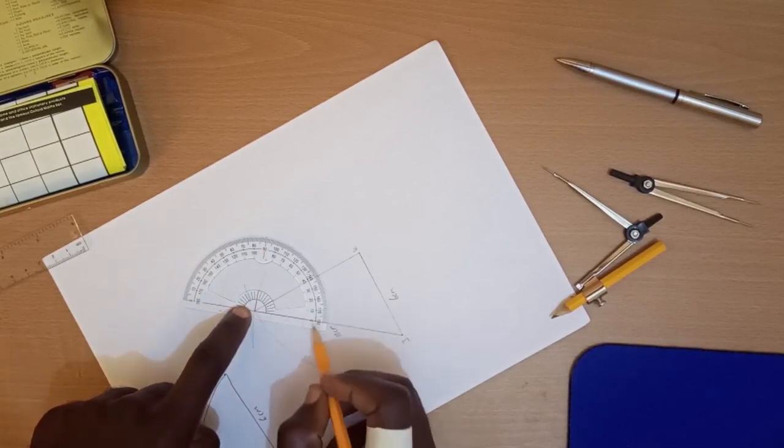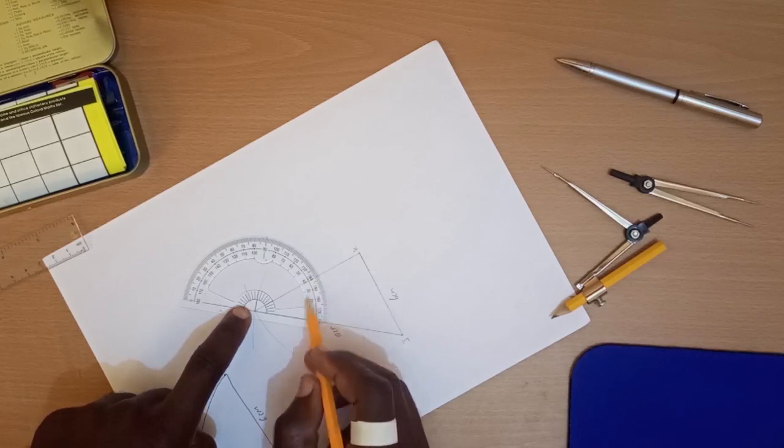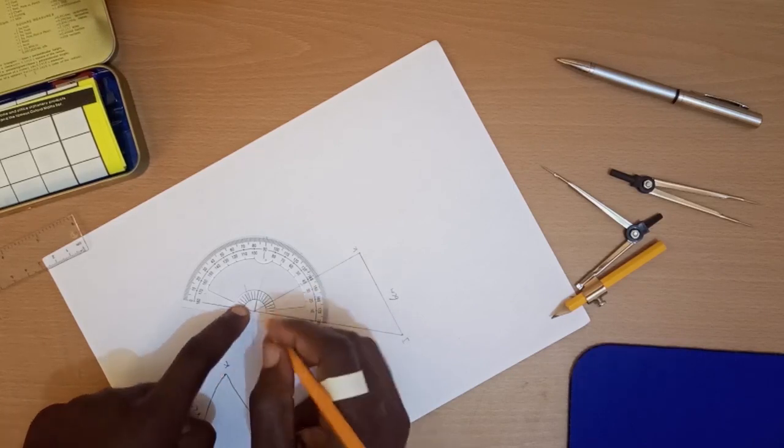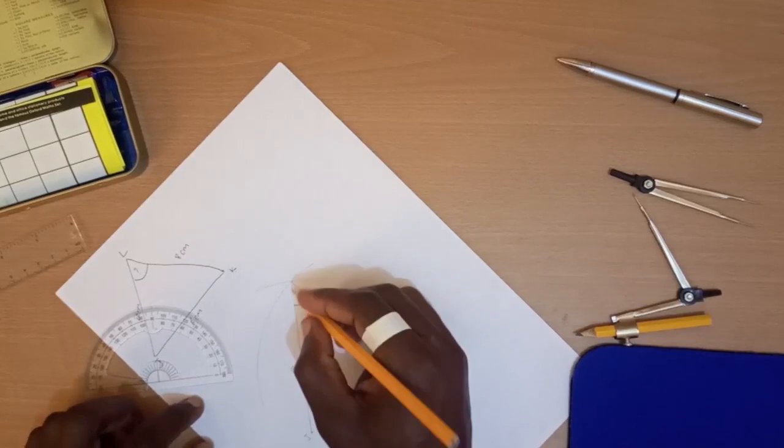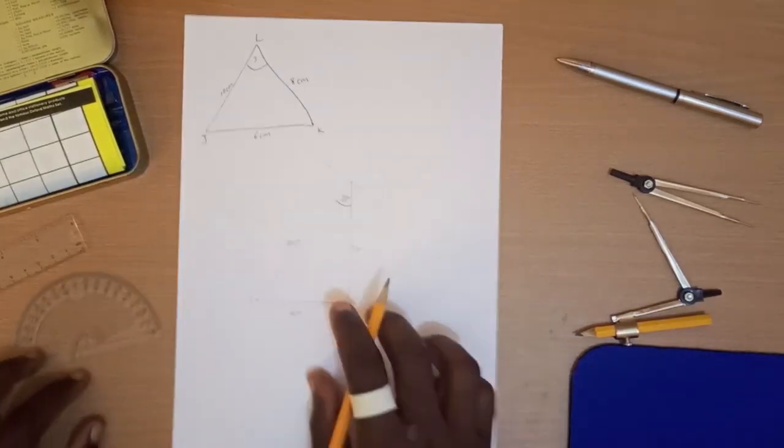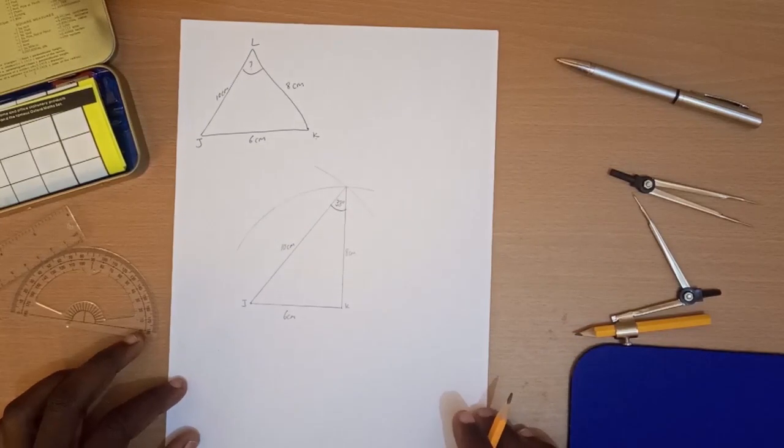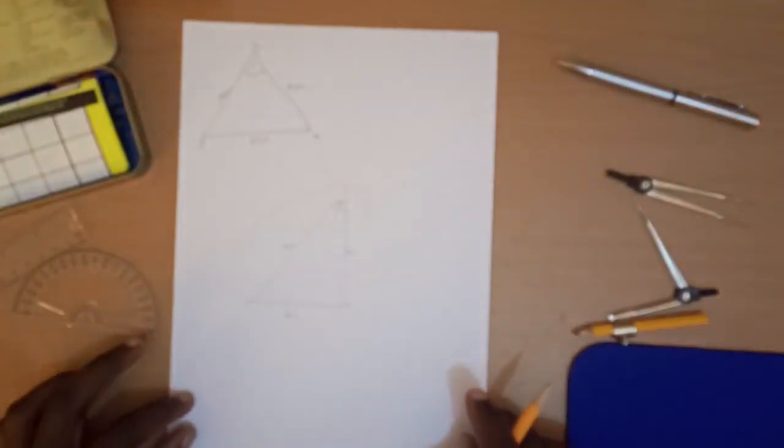We measure 10, 20, 30, 40, 30, okay 30, 35, 1, 2, 3. So this is something like 38. That should be 38 degrees.